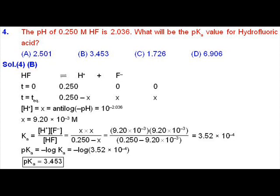At equilibrium, x moles will be converted into the ions. We can calculate the value of x, that is the concentration of H⁺, from the given pH. The pH value is given as 2.036, which means concentration of H⁺ will be equal to 10 raised to the power minus 2.036.